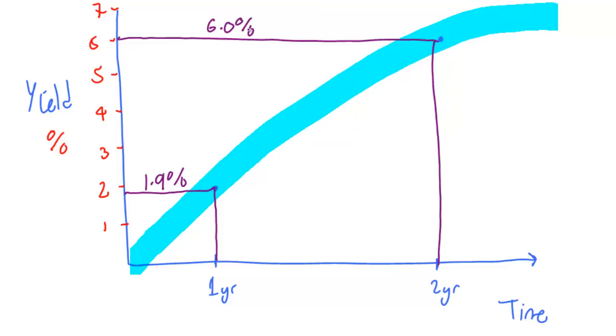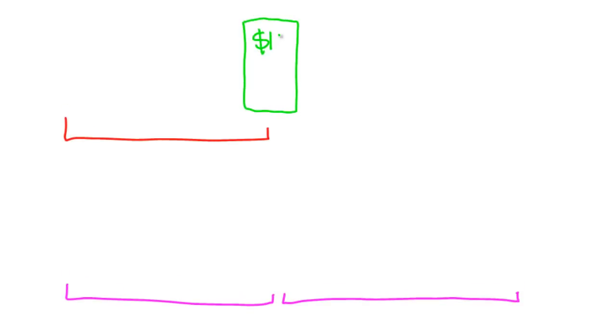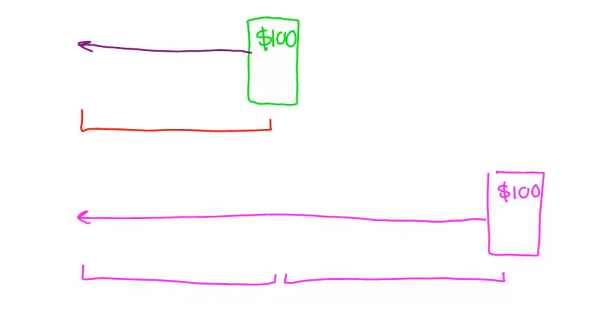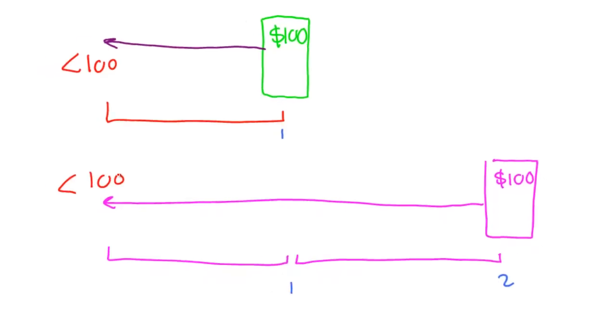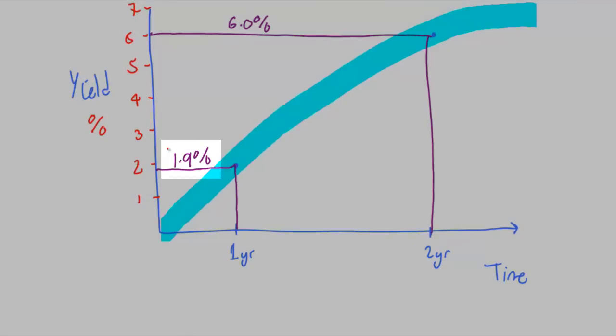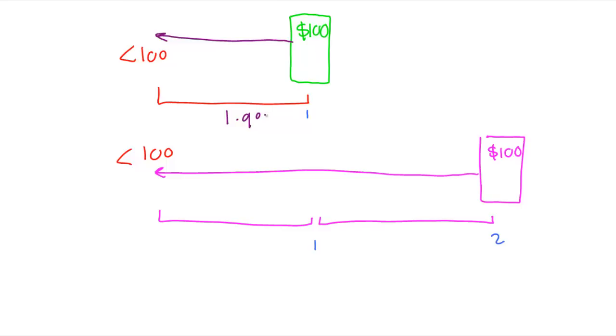These two yields can probably be best shown by a new product called a zero coupon bond. As the name suggests, it's a bond which has the principal payment but no coupons. You can get $100 in one year's time that will present value back to today, and $100 principal in two years time with no coupons, again present valuing back to today. You will pay less than $100 for each one, with the two year one being cheaper. No coupons to worry about in this case. So that first one has a yield of 1.9% and the second one has a yield of 6%.